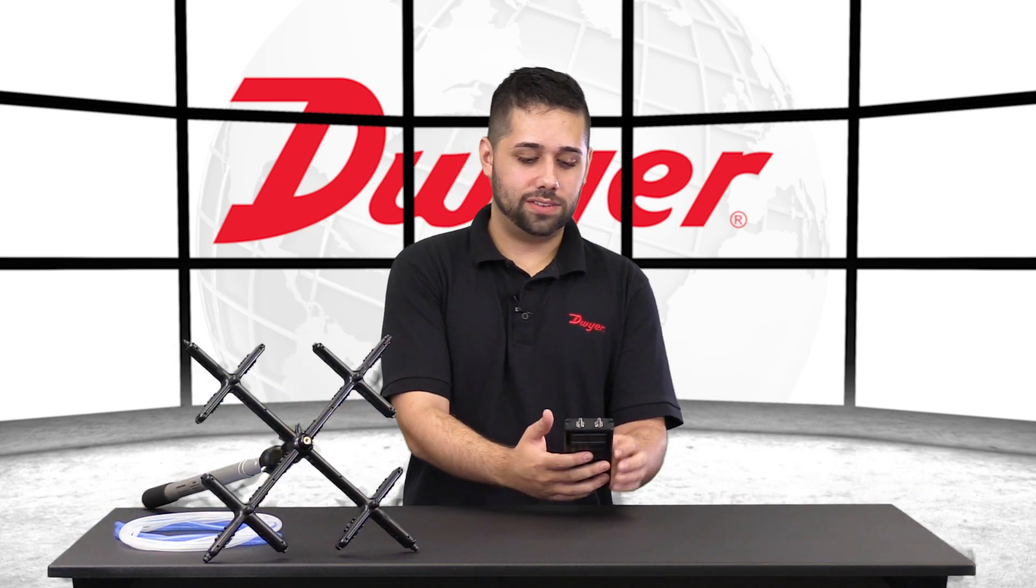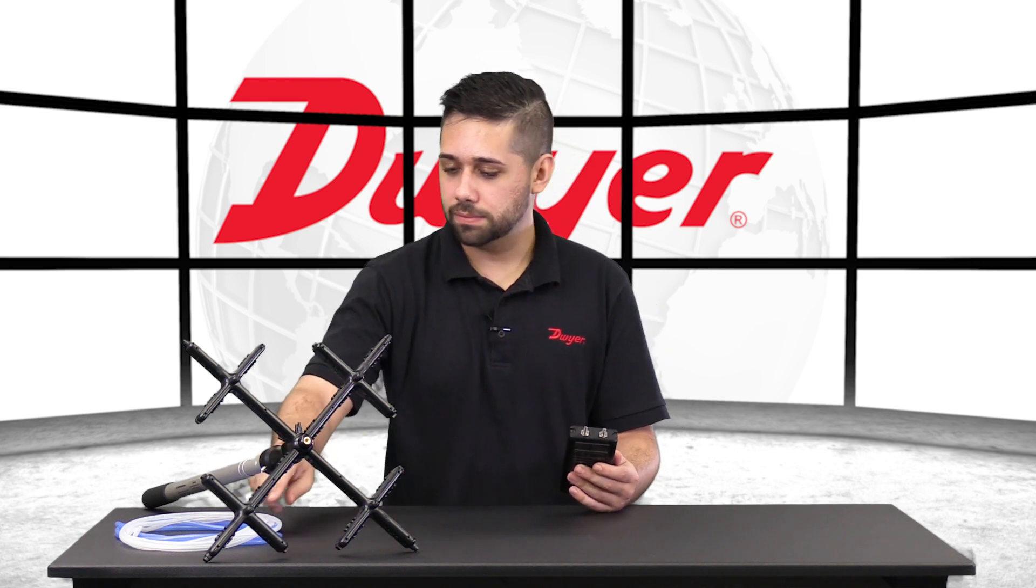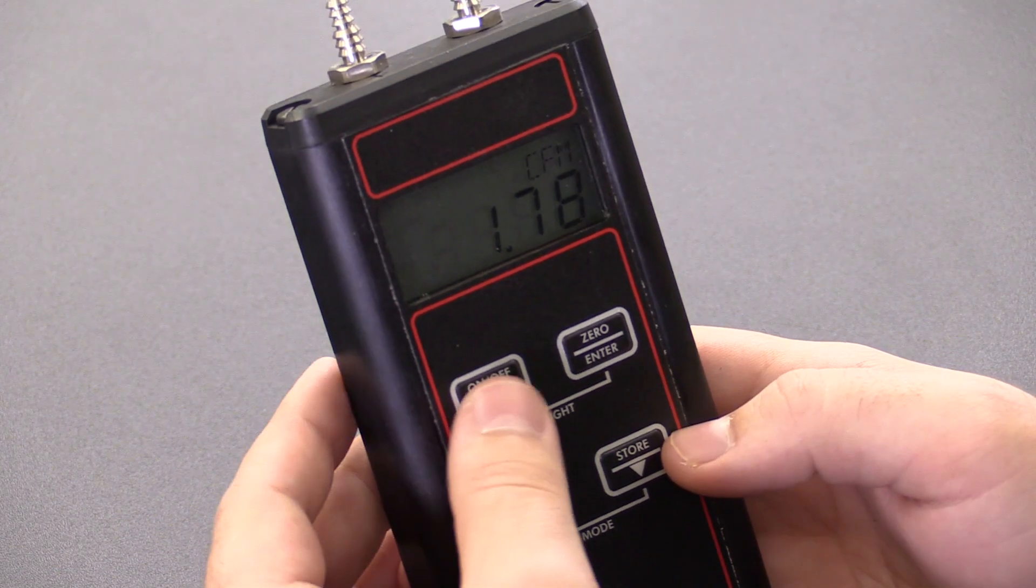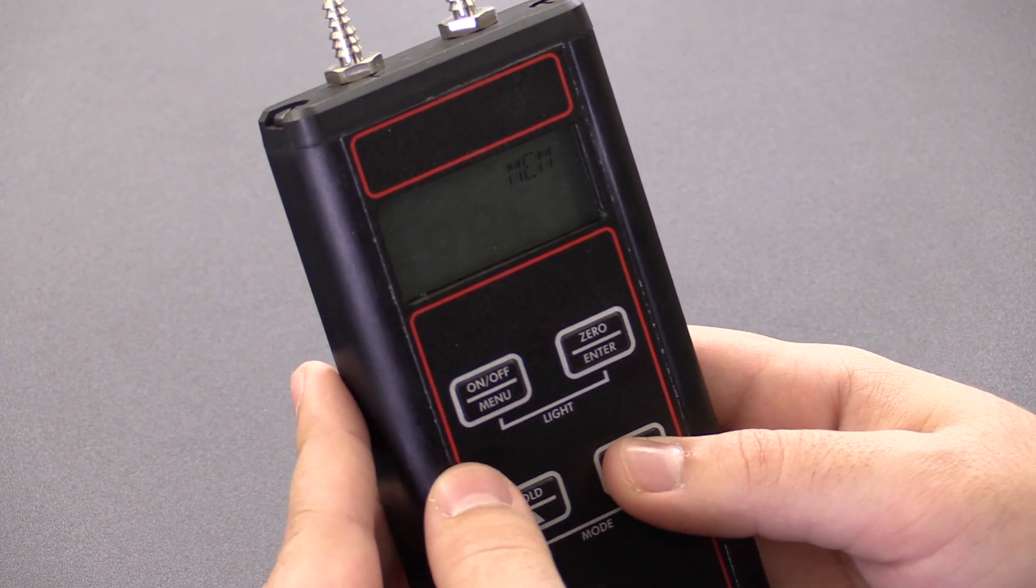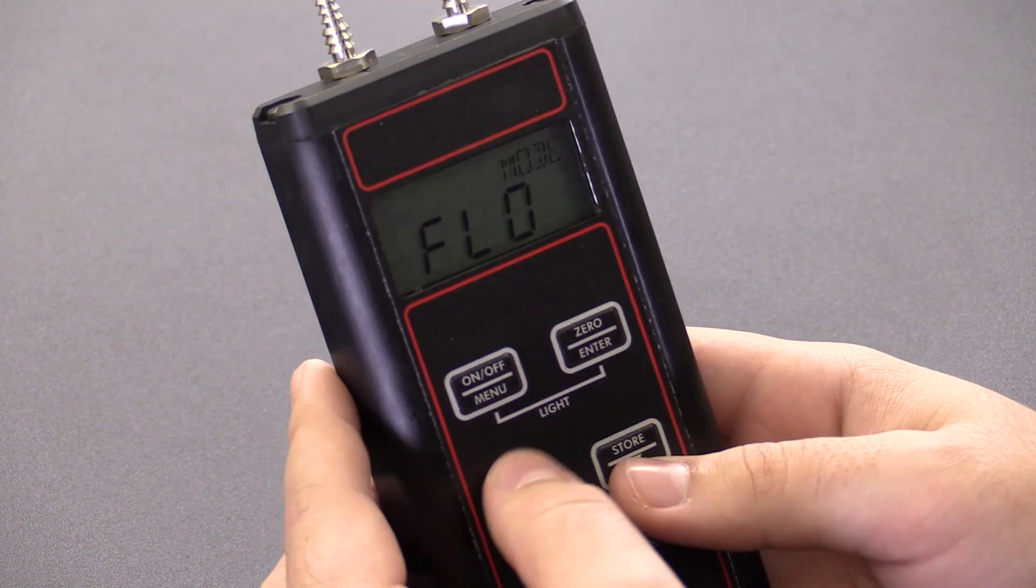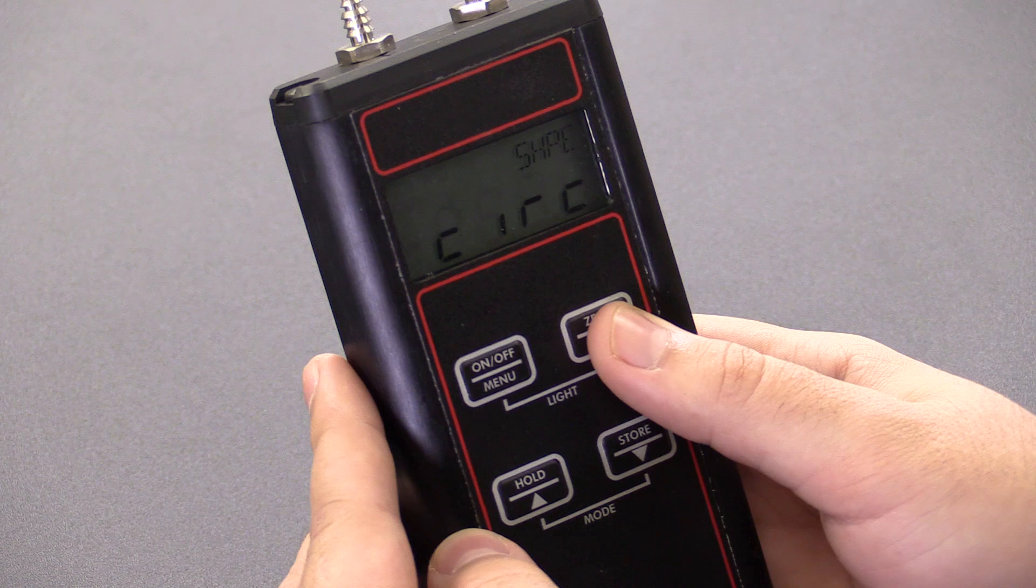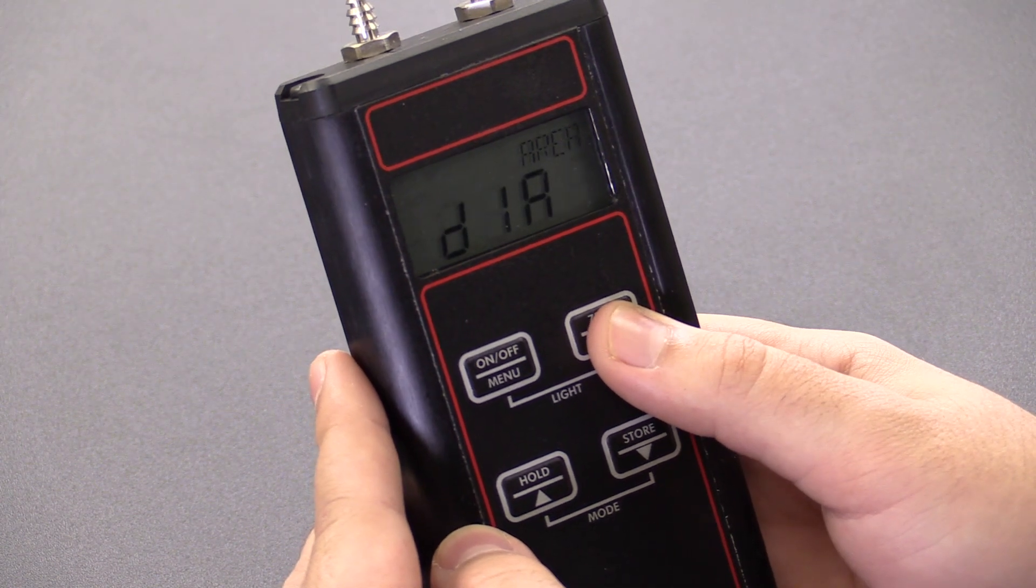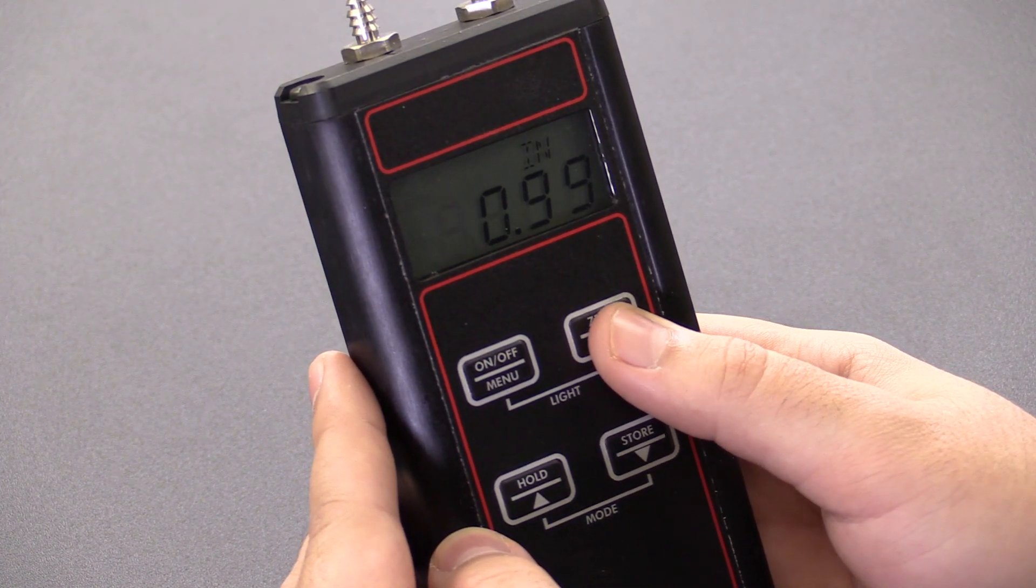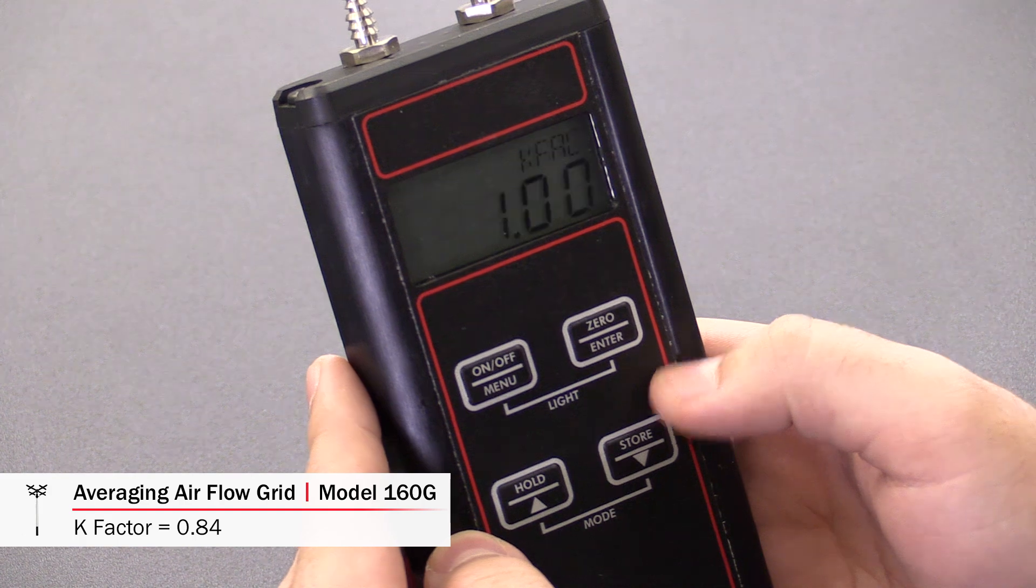Next, let's connect the 477AV to the 160G. First, we'll need to adjust the K-factor to match the air grid. Just go into flow mode once more. We can keep everything else the same. The K-factor's got to go to 0.84.